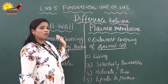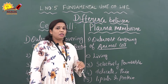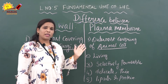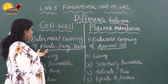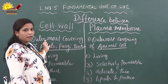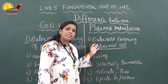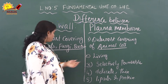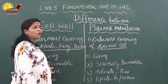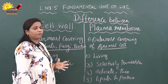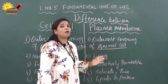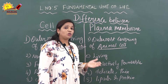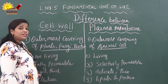Now let us discuss the differences between cell wall and plasma membrane. The cell wall is the outermost covering of plants, fungi, bacteria, and algae, whereas the plasma membrane is the outermost covering of animal cells. The cell wall is non-living in nature, while the plasma membrane is living. The cell wall is a fully permeable membrane — it allows all kinds of substances in and out — but the plasma membrane is a selectively permeable membrane. The cell wall is rigid and thick, whereas the plasma membrane is delicate, thin, and flexible.